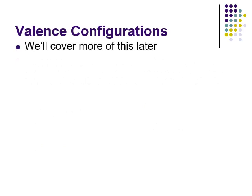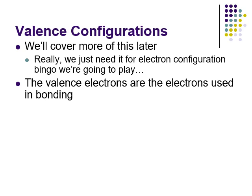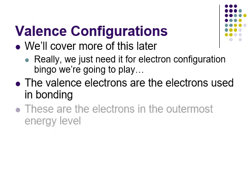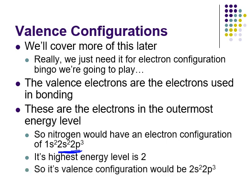Valence electrons are the electrons used in bonding — very important coming up. They are the electrons in the outermost energy level, not the outermost sublevel. For nitrogen (1s²2s²2p³), the highest energy level is 2, so everything in the second energy level — 2s² and 2p³ — are the valence electrons. The valence configuration is 2s²2p³.